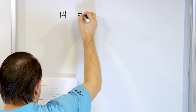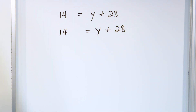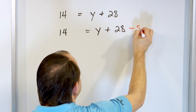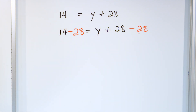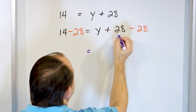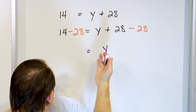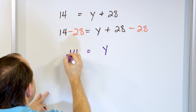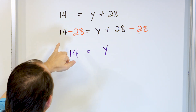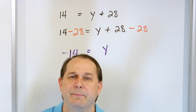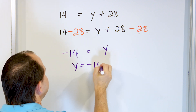Problem 5: 14 equals y plus 28. On the right-hand side we're adding 28, so to get the variable by itself we subtract 28 from both sides. On the right, 28 minus 28 is 0, leaving just y. On the left, we need 14 minus 28 — we can't do that with normal numbers, so we subtract 28 minus 14 which is 14, and slap a negative sign on it. Or think of it as 14 plus negative 28: when adding opposite signs subtract them, and the sign goes with the bigger absolute value — so the answer is y equals negative 14.